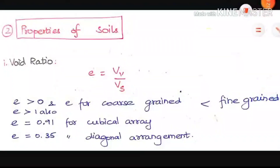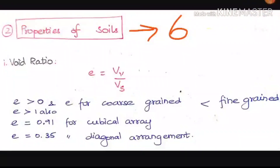We are going to see six properties of soil. The first one is the void ratio, denoted by E, which is equal to the volume of voids divided by the volume of solids. This value can be greater than 0 and it can also be greater than 1, because the voids can be more than the volume of solids itself.